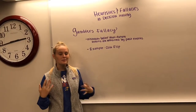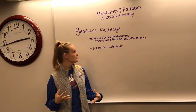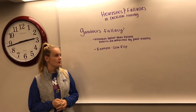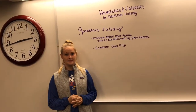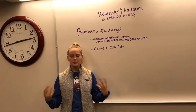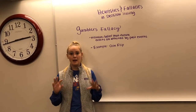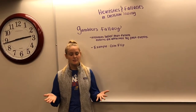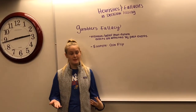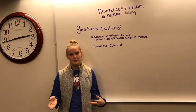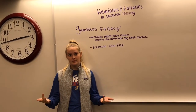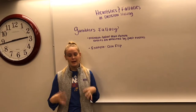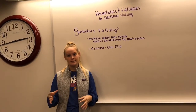Now, let's talk about gambler's fallacy. Gambler's fallacy is the mistaken belief that future events are affected by past events. For example, if you're tossing a coin and you get heads five times in a row, you might predict that because you've gotten heads five times in a row, the next one you would get would be tails. But events are actually independent of each other, and past events cannot predict future events.